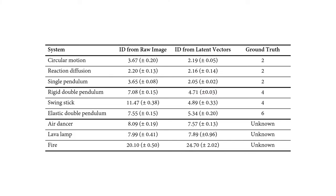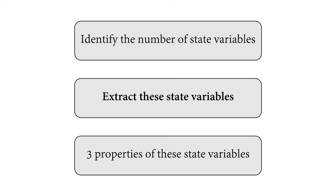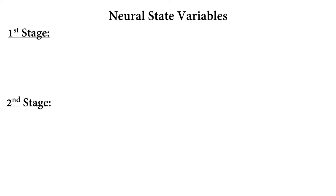As summarized in this table, for known systems, our approach produces highly accurate intrinsic dimension estimations. For unknown systems, the ranking of our estimations also makes sense. Our method outperforms direct estimations from raw images. Now that we have identified the number of state variables, we need to find the actual variables themselves.